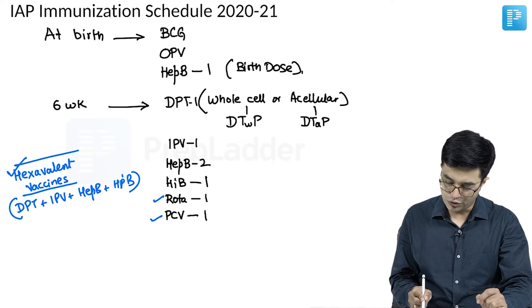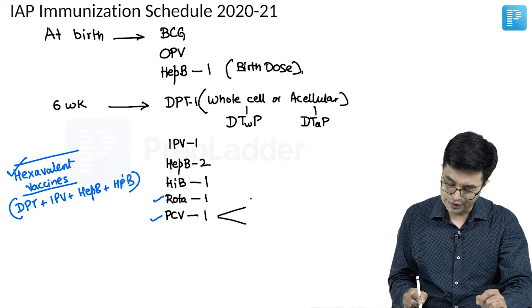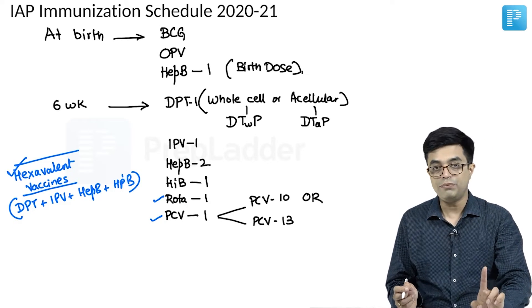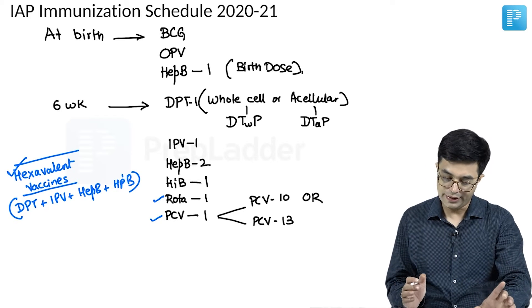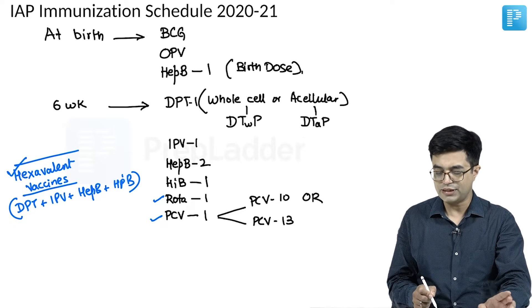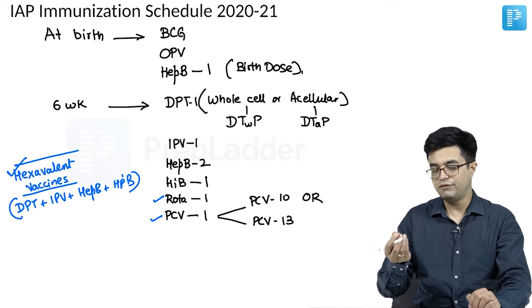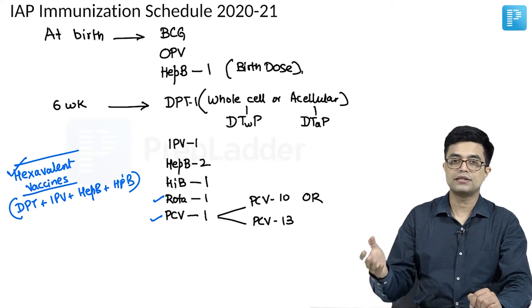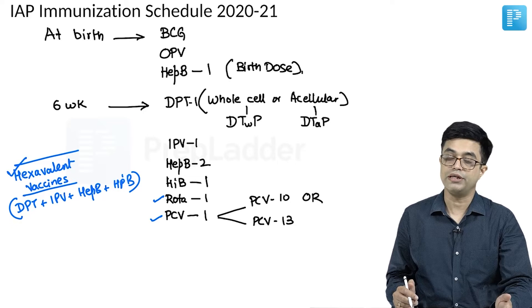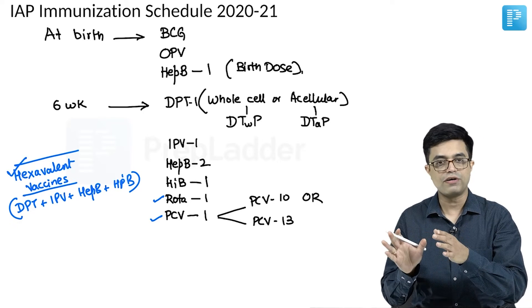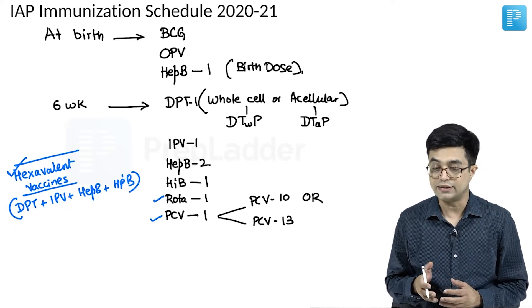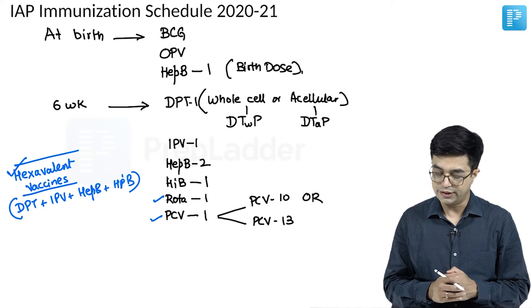According to the IAP schedule, you can use either PCV 10 or PCV 13. In the national immunization schedule, only PCV 13 is recommended. In the IAP schedule, either PCV 10 or PCV 13 may be used. If you choose one, subsequent doses should preferably be the same type. There are significant cost differences in the private sector, which is why options are provided in the IAP schedule.